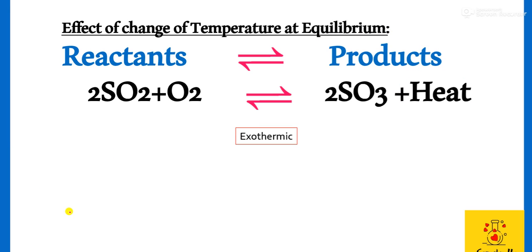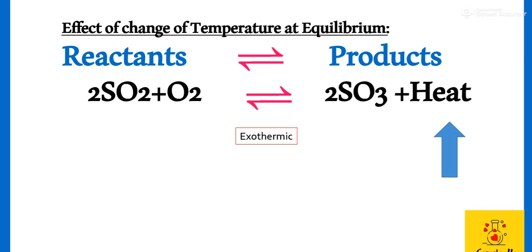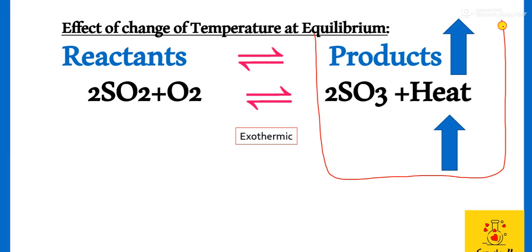Toh jab hum temperature ko increase karenge, hum heat ko increase karenge. Or it means hum products ko increase karenge. Toh agar products increase ho ngi, produkts ke darmiyan mein collisions ho ngi, toh humai paas zyada collisions ho ngi. Toh equilibrium disturb ho jayega.